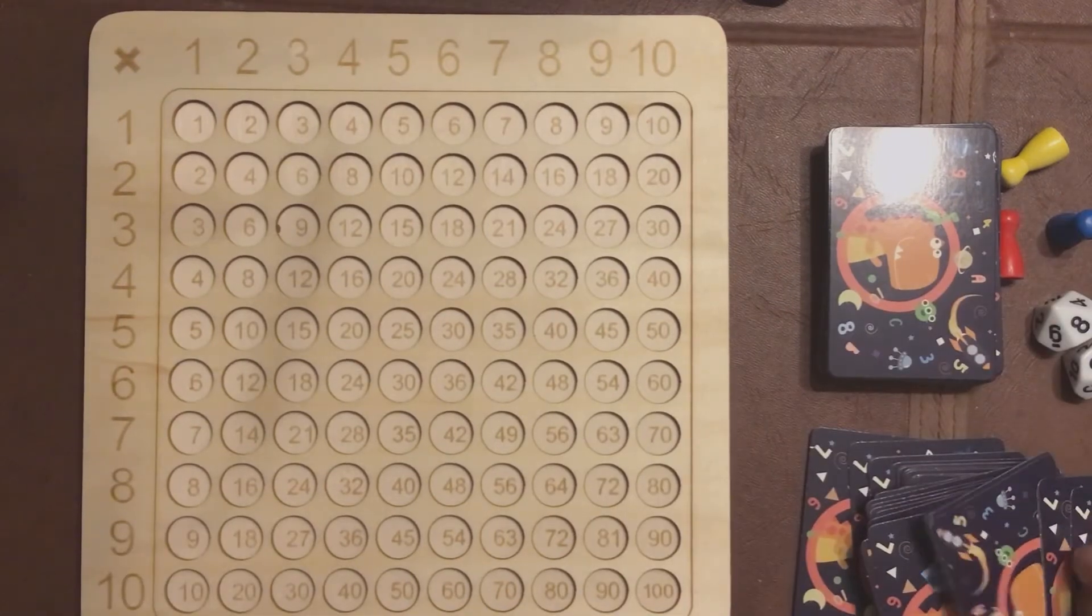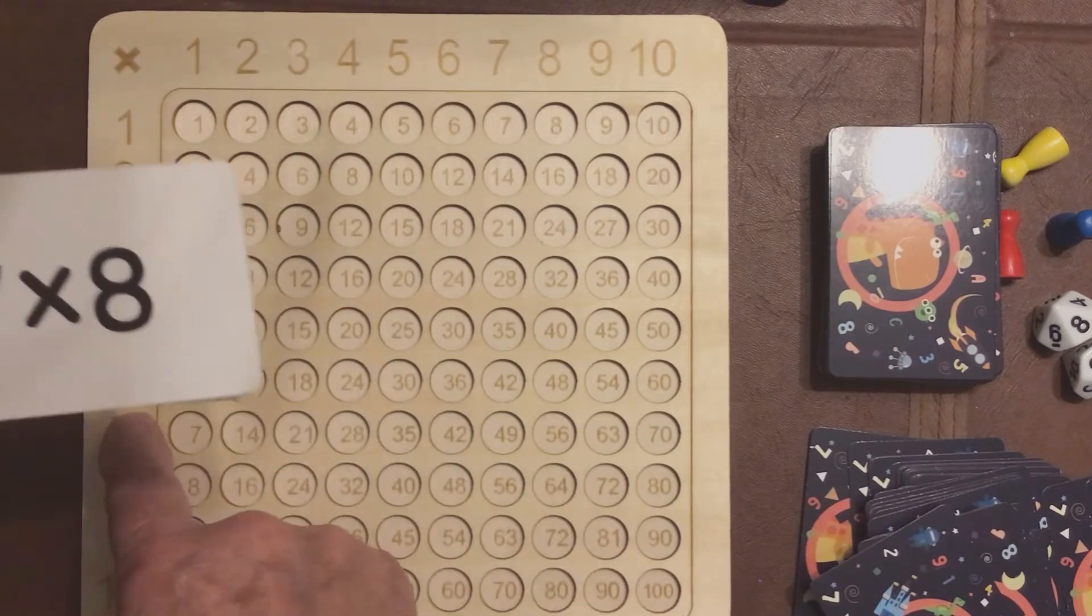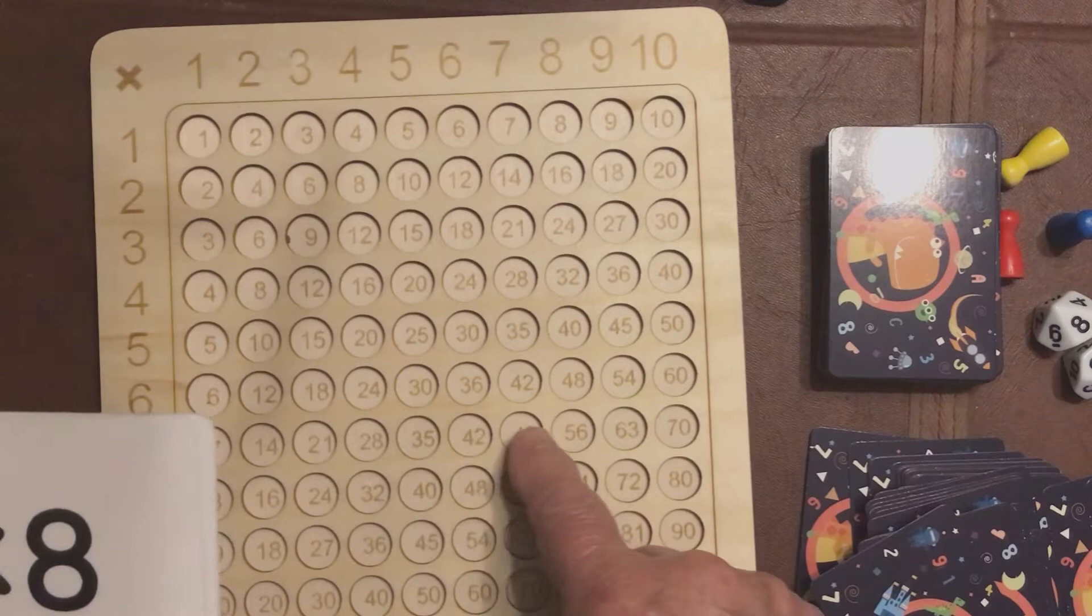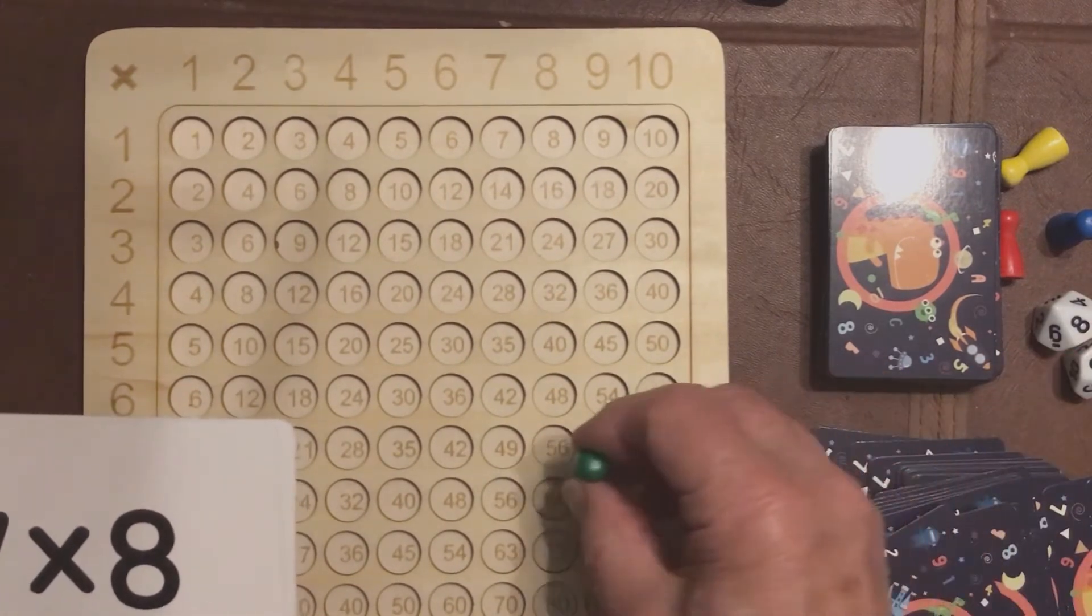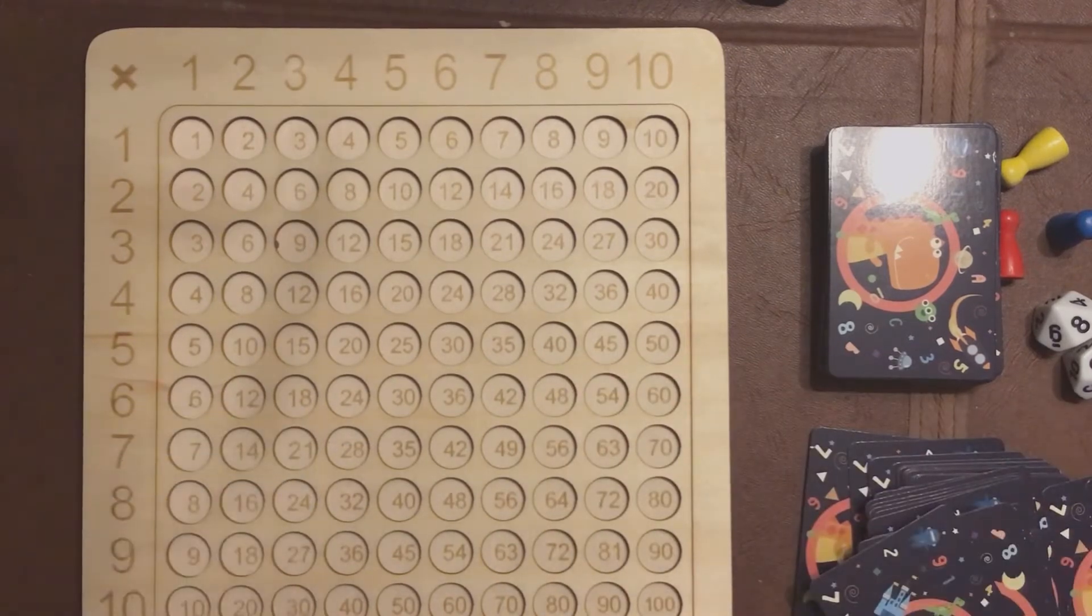Another one, seven by eight. So, we go to seven down here, along to eight here, put a token on like that, and the answer is 56, and so on. It's quite simple to use.